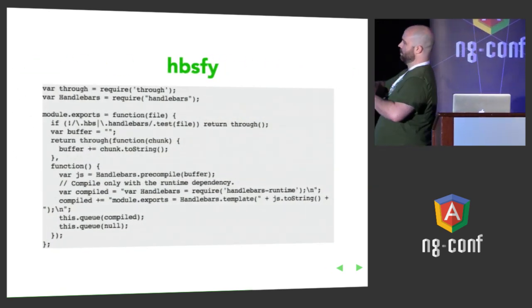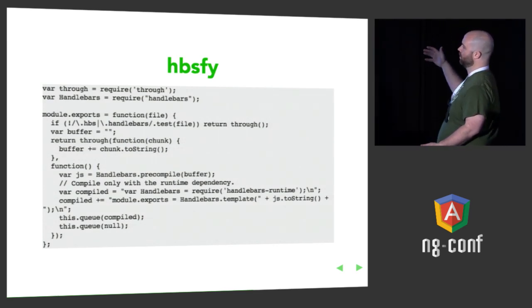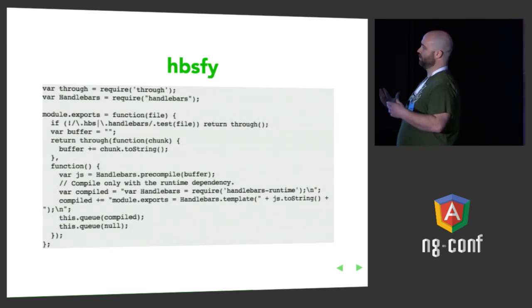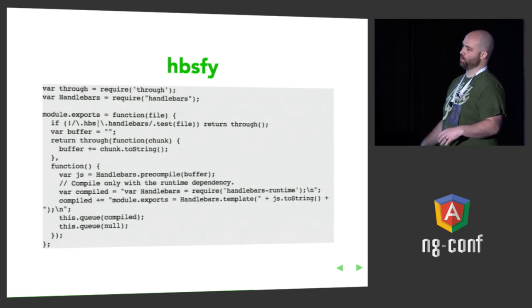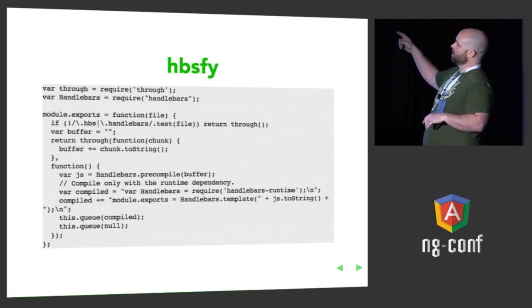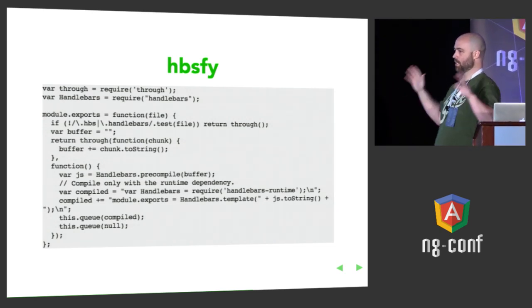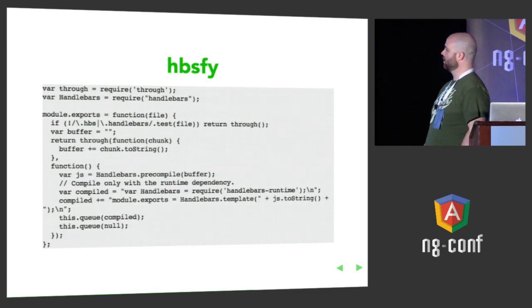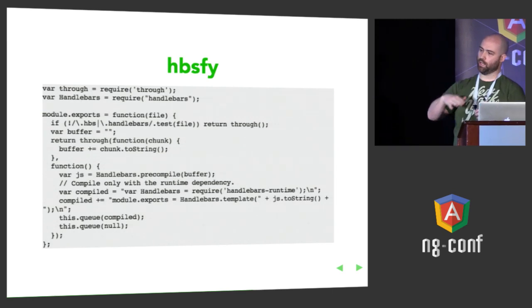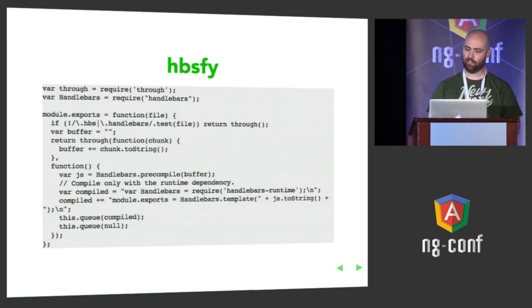This is the entirety of the code for the HBSify transform module. It just exports a single function. That function accepts a file — that's the signature for any transform you write; Browserify is just going to send you a file. This one checks the file name to see if it's a Handlebars file. If it's not, it exits. If it is, it reads the file into memory, pre-compiles it, and replaces the code with the pre-compiled template. Very, very handy, very, very easy.